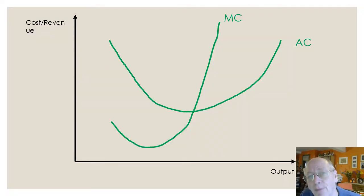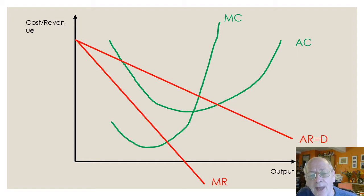So we start with a quick recap of how to do the profit diagram. We start off with the cost curves. Remember the marginal cost curve must cut the average cost curve at its lowest point. We then add on the revenue curves. So the average revenue curve is a demand curve. Remember the marginal revenue curve is horizontally roughly halfway to the average revenue curve.